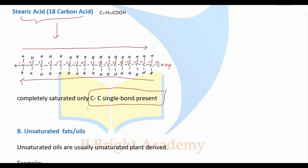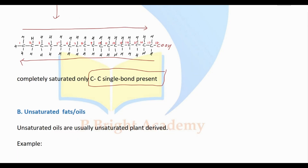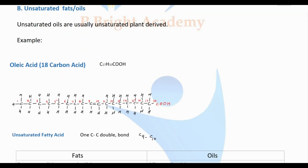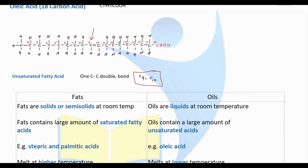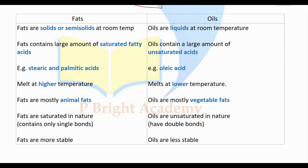Unsaturated fats and oils are also an 18-carbon fatty acid — oleic acid — but there is a double bond present between C9 and C10. Because there is a double bond, it is called an unsaturated fatty acid. Oleic acid is an example of an unsaturated fatty acid.